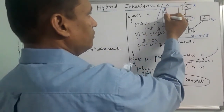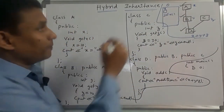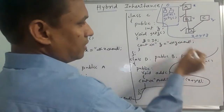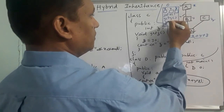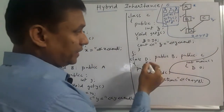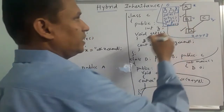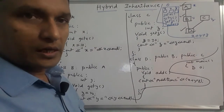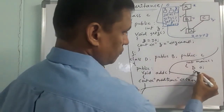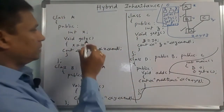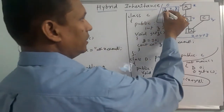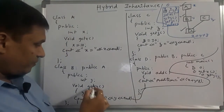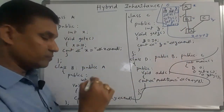X is a data member and get x is the function. Y is a data member and get y is the function. We call o.get_x(), which sets x equal to 10 and prints x. Then o.get_y(), which sets y equal to 20 and displays y.